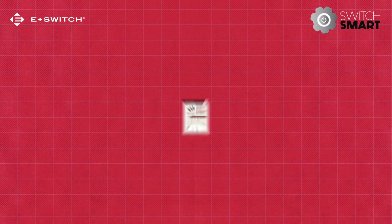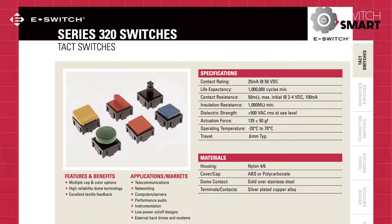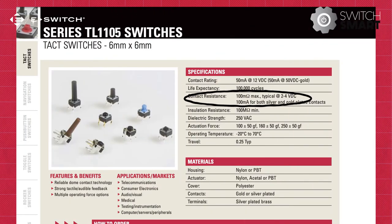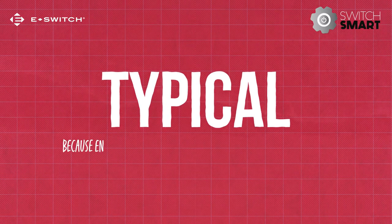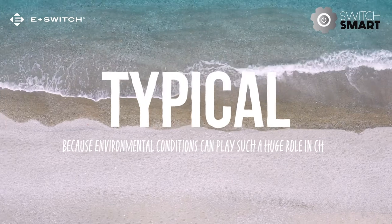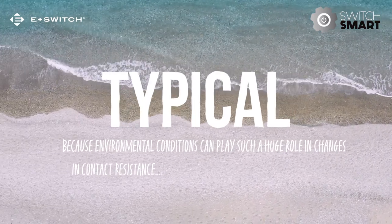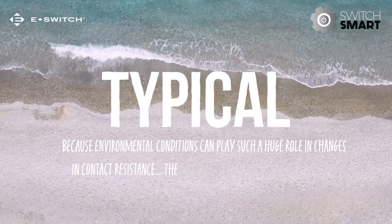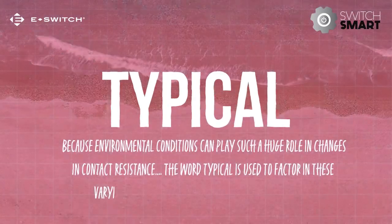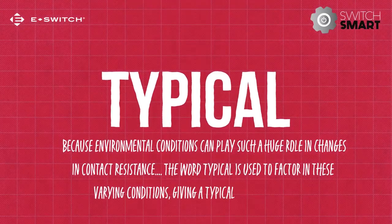Now let's take a look at how this is written on a datasheet. If we look at the specifications, this particular tack switch has a contact resistance of 50 milliohms max initial at 2–4 VDC, whereas this one says 100 milliohms max typical at 2–4 VDC. Typical means that because environmental conditions can play such a huge role in changes in contact resistance — whether that be in high humidity areas by the coast with increased salt in the air — the word typical is used to factor in these varying conditions, giving a typical contact resistance.